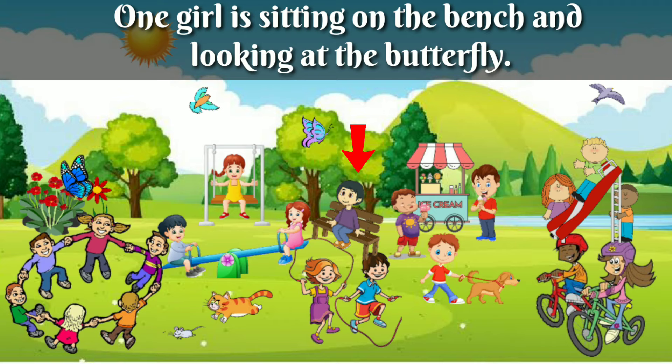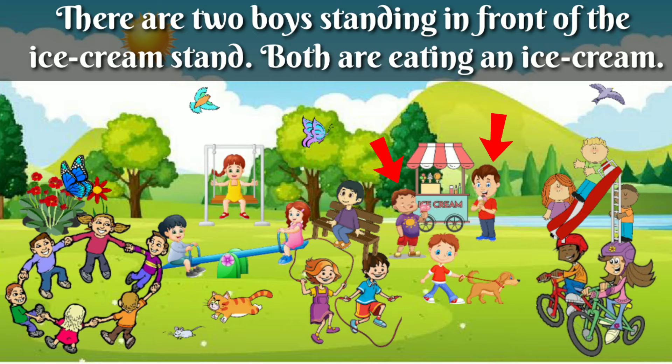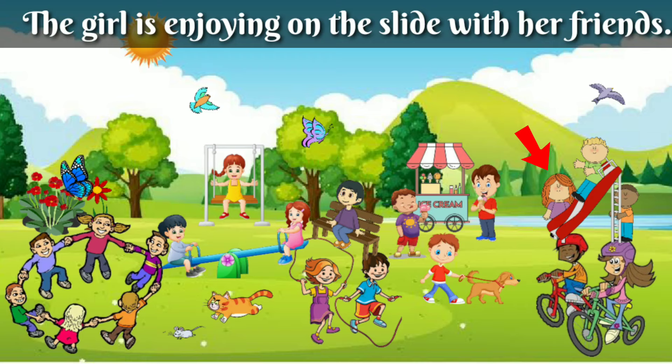There are two kids playing on the slip rope. The boy is walking with his dog. There are two boys standing in front of the ice cream stand — both are eating an ice cream. The girl is enjoying on the slide with her friends. Two children are riding the bicycle. The children are looking very happy.